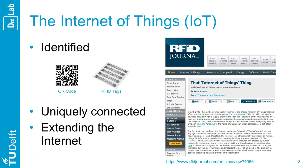To leverage a technology in design, it is important to understand what it is. The Internet of Things would have been coined by Kevin Ashton in 1999 — at least, that is what he describes in this RFID Journal article of 2009.